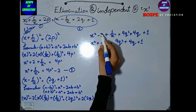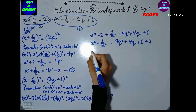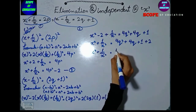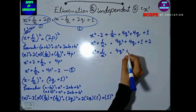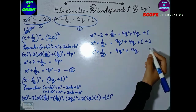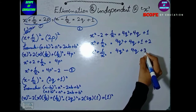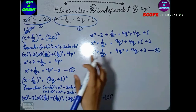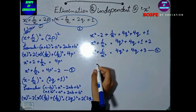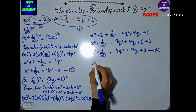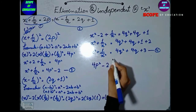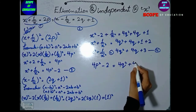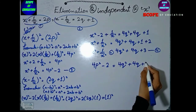So we have minus here and we have plus 2. 4q square minus 2 — so this will give plus 3. This is our equation 4. Now we will compare equation 4 and equation 3. First of all we have 4p square minus 2 is equal to 4q square plus 4q plus 3.